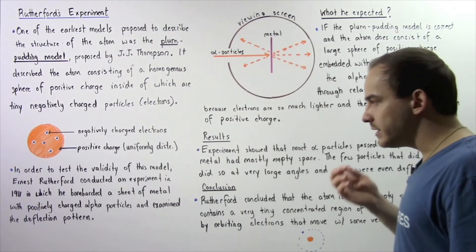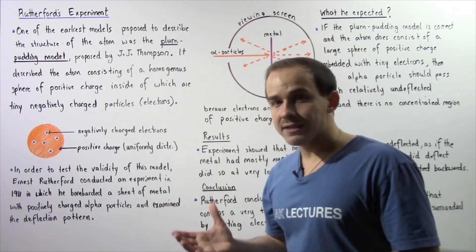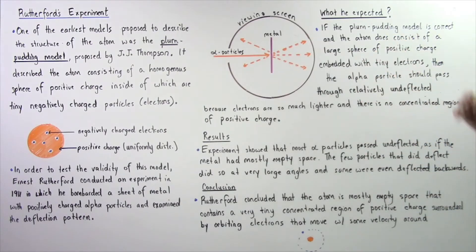What exactly did Rutherford expect to take place? If the plum pudding model is in fact correct and the atom does consist of a large sphere of positive charge embedded with tiny electrons, then the alpha particles should pass through relatively undeflected.